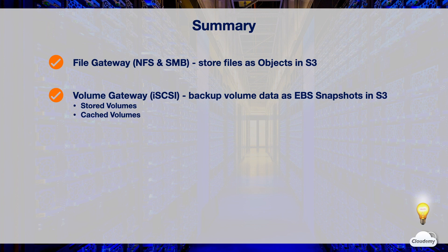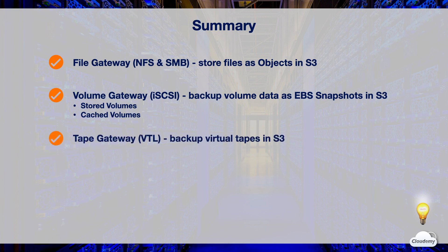Volume Gateway comes in two options: cached volumes, which stores all on-premises application data in S3 and retains recently accessed data locally; and stored volumes, which stores the primary data locally while asynchronously backing up that data as EBS snapshots to S3. Tape Gateway presents a virtual tape library (VTL) of virtual tape drives and a virtual media changer to your backup application using iSCSI protocol, allowing you to leverage existing tape applications and workflows while backing up virtual tapes in S3.